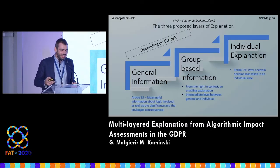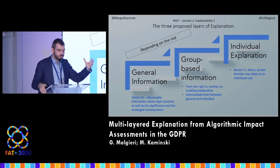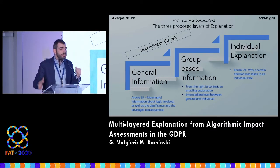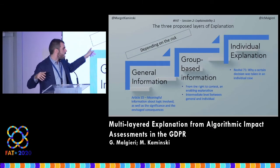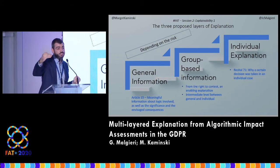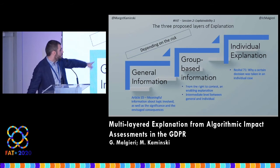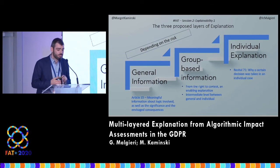We try to understand different layers of explanation. We have at least two poles: general information under Article 15 — meaningful information about the logic involved — and individual explanation, meaning why a certain decision was taken. Yesterday's tutorial defined global explanation and case-by-case explanation; I think these are the two poles. Since GDPR under Article 24 requires a risk-based approach — the higher the risk for data subjects, the higher the safeguards — we imagine the first pole should be guaranteed to everyone, the last one only in the most risky situations, and an intermediate level should be a scalable, group-based explanation.